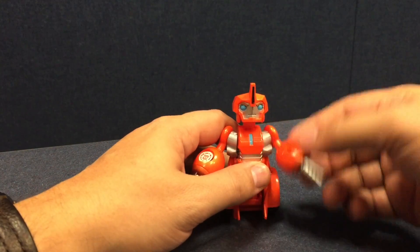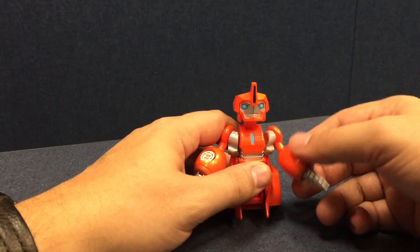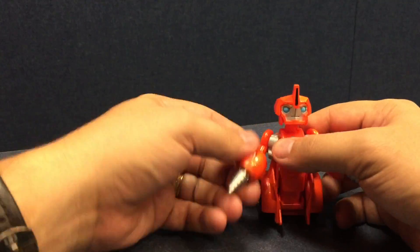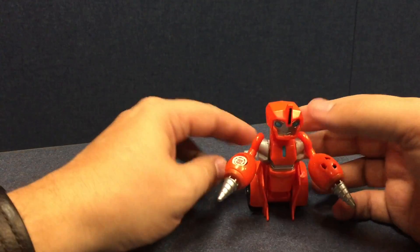His only real articulation is that his arms move up and down. They do move a little bit there on that transformation hinge, but there's a pivot joint right there. That's his articulation.